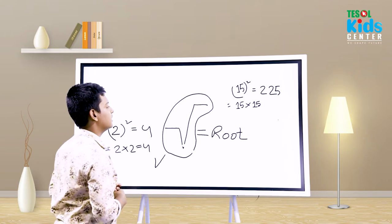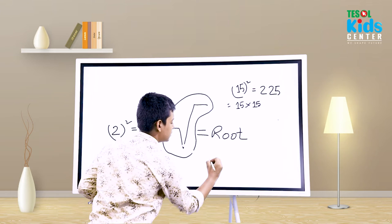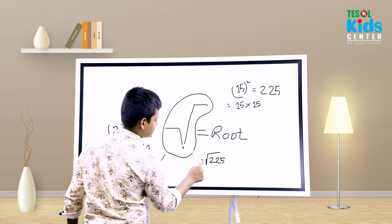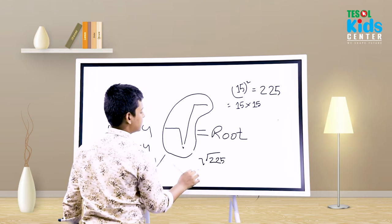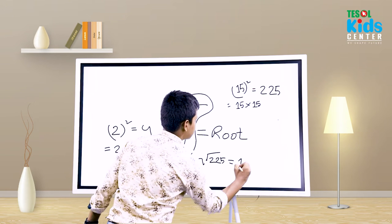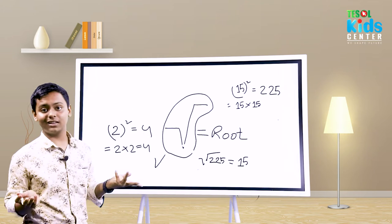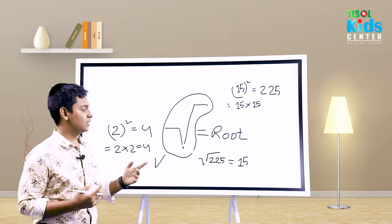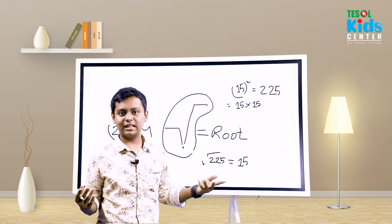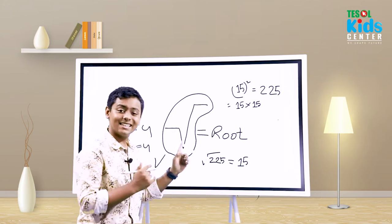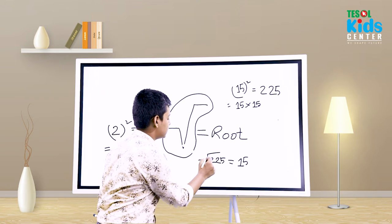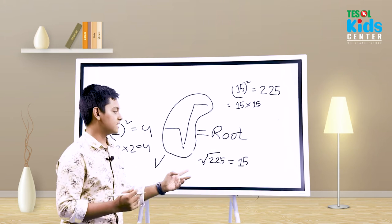This root mark is always put in front of a number that has been squared. So if I put a root mark in front of 225 — that's the root of 225 — the answer will be 15. Very easy! How do we get it? Because 15 into 15, we're multiplying the same number and getting the square value. That's why the root value of 225 is 15, just the upside-down of squaring.